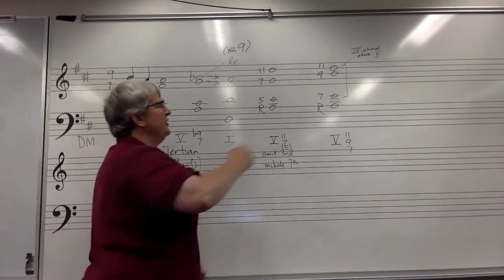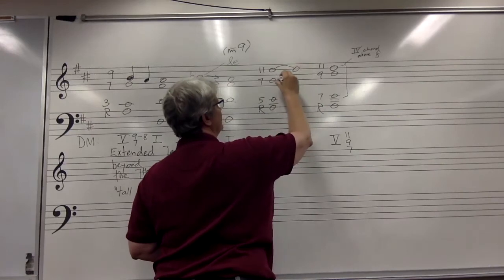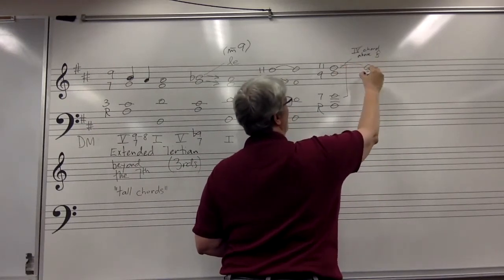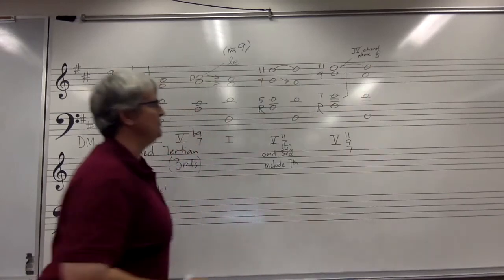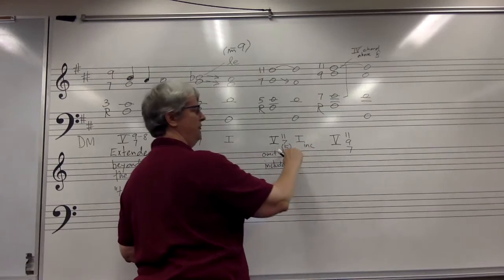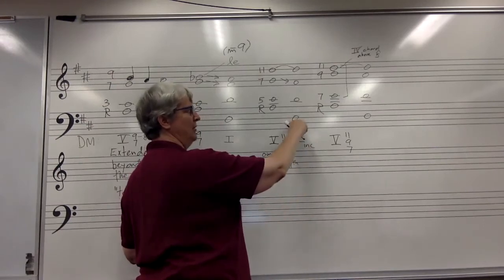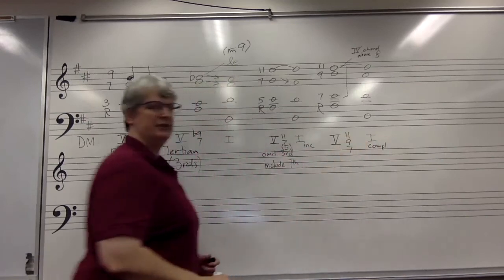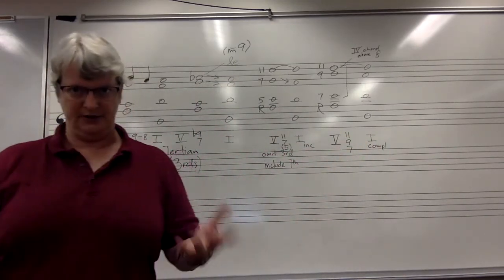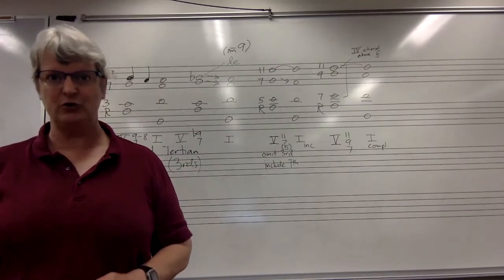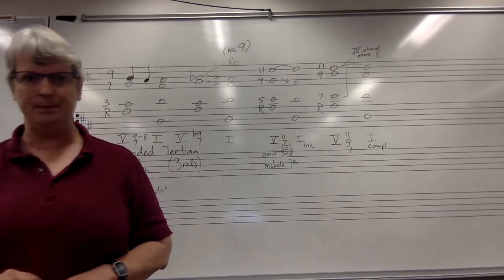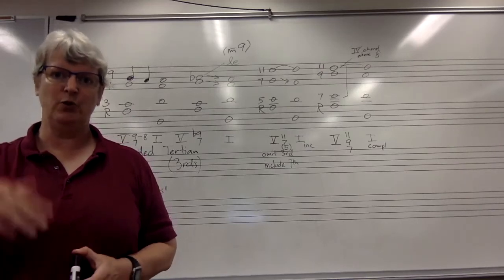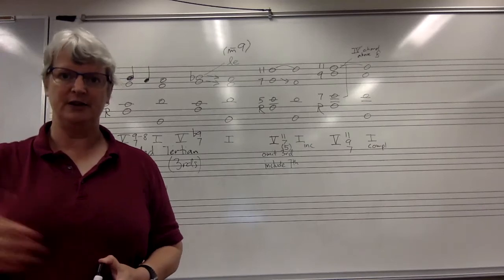When an eleventh chord resolves, the eleventh resolves by common tone, and the seventh resolves down. So we go either to an incomplete one chord — if we had the fifth in the chord, to avoid parallel fifths — or we can go to a complete one chord if we had the 11-9-7 voicing. Eleventh chords don't have to be dominant chords; they can be built on other scale degrees. The two-eleven is particularly common. When you have a two-eleven, it includes scale degree five, so that when it resolves to the five chord, that note is kept as a common tone.